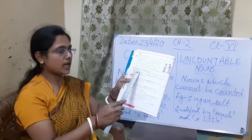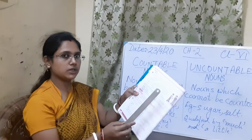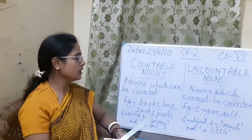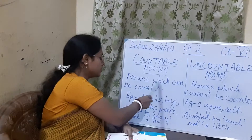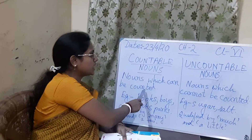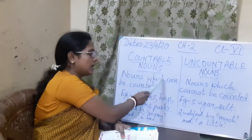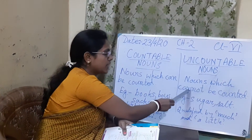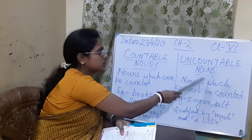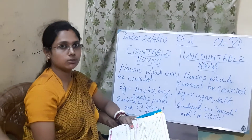Nouns which can be counted are called countable nouns. And nouns which cannot be counted are called uncountable nouns.